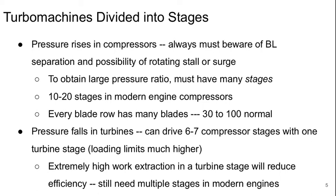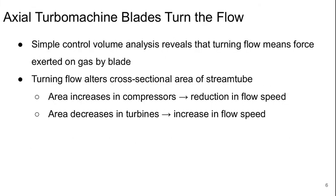Extremely high work extraction in a turbine stage will reduce the efficiency, so we still need multiple stages in modern engines. Axial turbo machine blades turn the flow — that's what they do. We can use simple control volume analysis to reveal that if we turn the flow, that means a force is exerted on the gas by the blade to do that turning. The turning of the flow also alters the cross-sectional area of the stream tube: the area increases in compressors because the flow in the relative sense is slowing down, and the area decreases in turbines because the flow is speeding up.